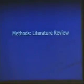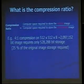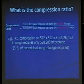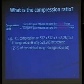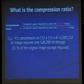The first terminology in the literature review is compression ratio, which is simply the computer space required to store the original image over the computer space required to store the compressed image. Here is a simple example showing compression ratio 4 to 1 using a 512 by 512 by 8 image, which can require a space of just 528,000-bit storage. So we save 25% of the original image space.